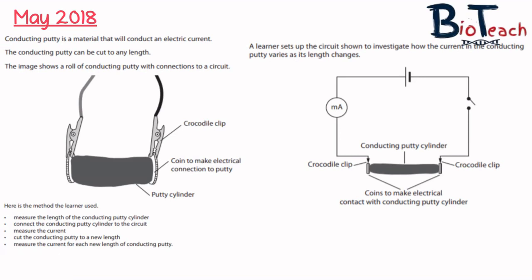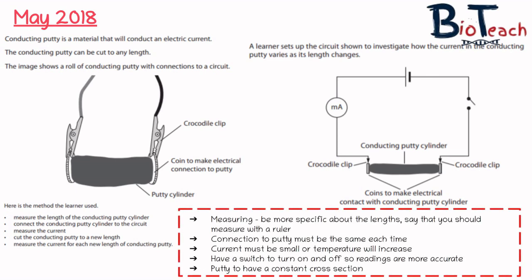Looking at the method, the setup looks fairly okay but there are a few things to note. First, it says 'measure the length of the conducting putty cylinder' — but what are you measuring it with? A ruler? A meter rule? Do you need millimeter precision? That hasn't been specified. Second, the connection to the putty should be the same each time. Third, the current passing through the circuit should be kept small, otherwise temperature increases and affects results — so there should be a switch to turn the circuit on and off between measurements to keep results accurate.